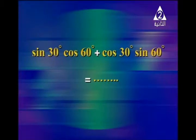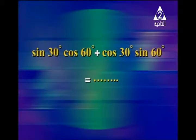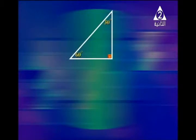Let us have another example: sin 30 degrees times cosine 60 degrees plus cosine 30 degrees times sine 60 degrees equals what? Here you can use your calculators to find the result, but we must write the steps. We draw the 30-60-90 right triangle: the side opposite 30 degrees is 1, the hypotenuse is 2, and the third side is square root 3.